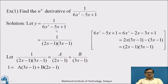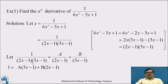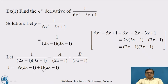Therefore, we can write the given function y equal to 1 upon (2x minus 1)(3x minus 1). Now we go for partial fractions, because we need to apply the formula of 1 upon ax plus b. Let 1 upon (2x minus 1)(3x minus 1) equal to A upon (2x minus 1) plus B upon (3x minus 1), since both factors are linear and distinct. Multiplying both sides by (2x minus 1)(3x minus 1), we get 1 equal to A(3x minus 1) plus B(2x minus 1).